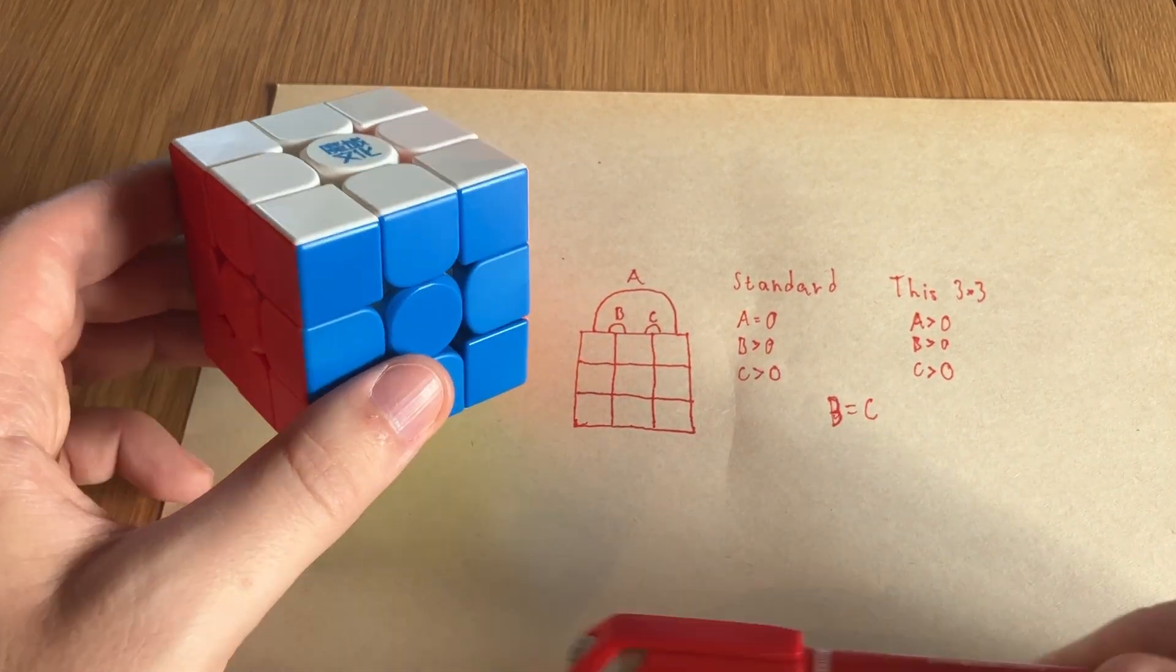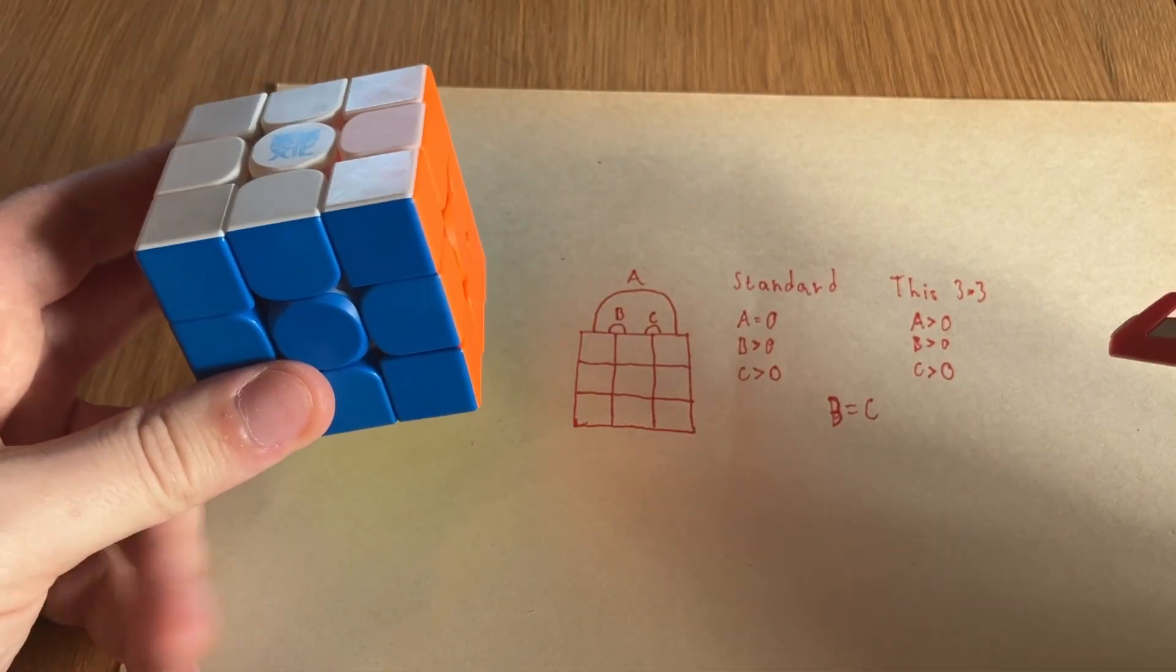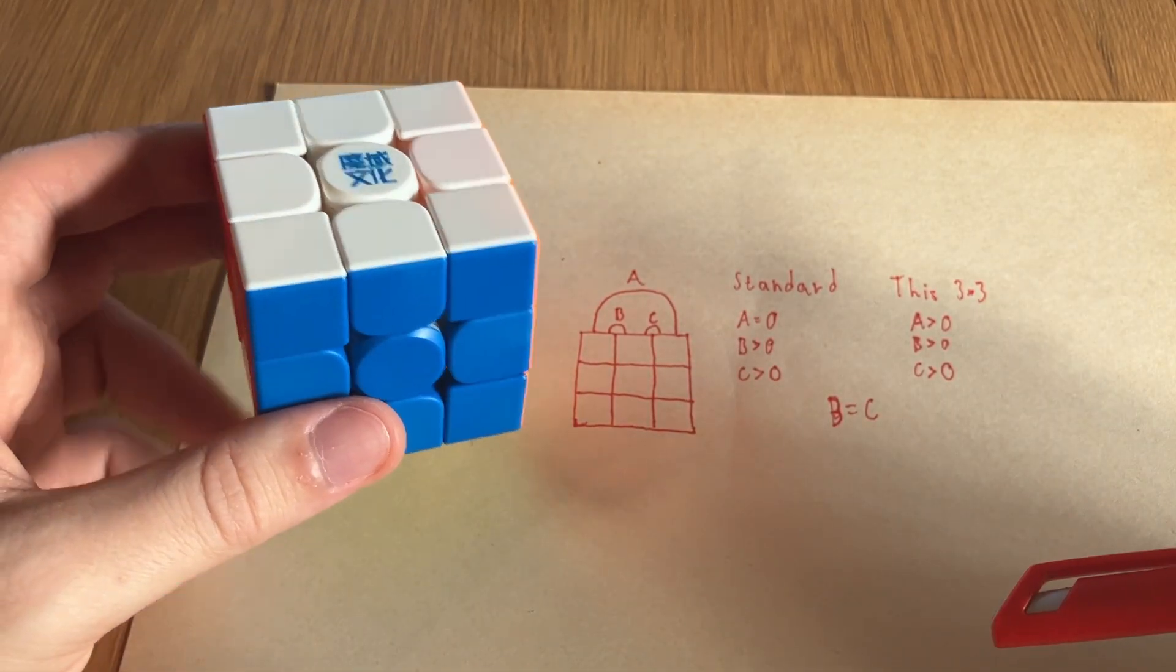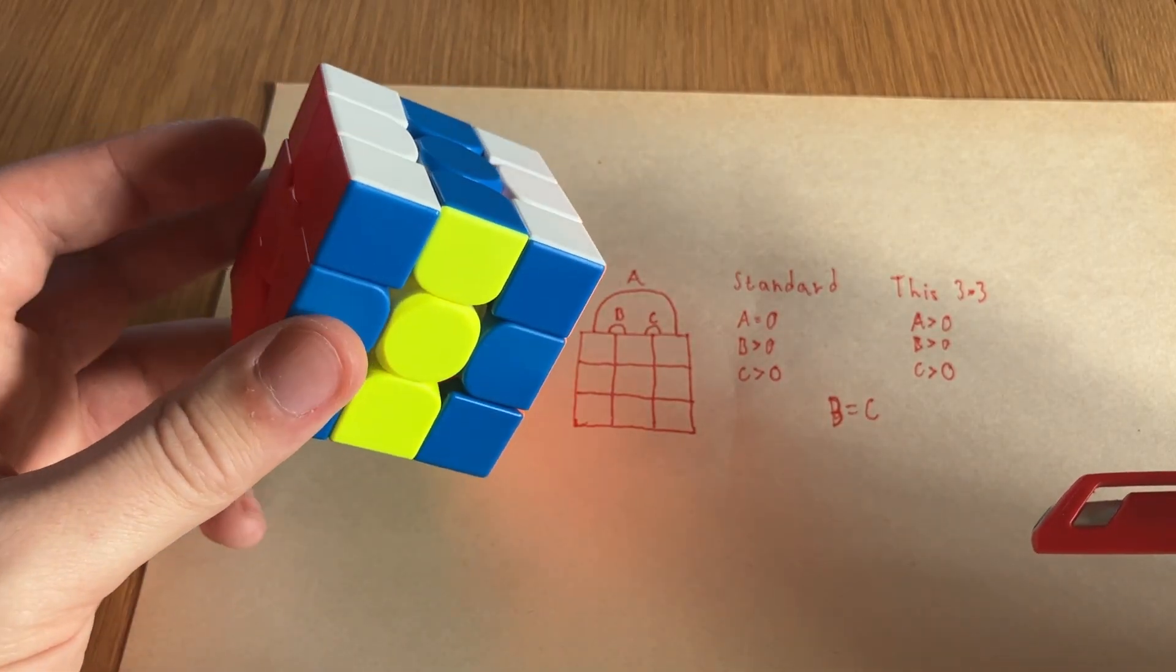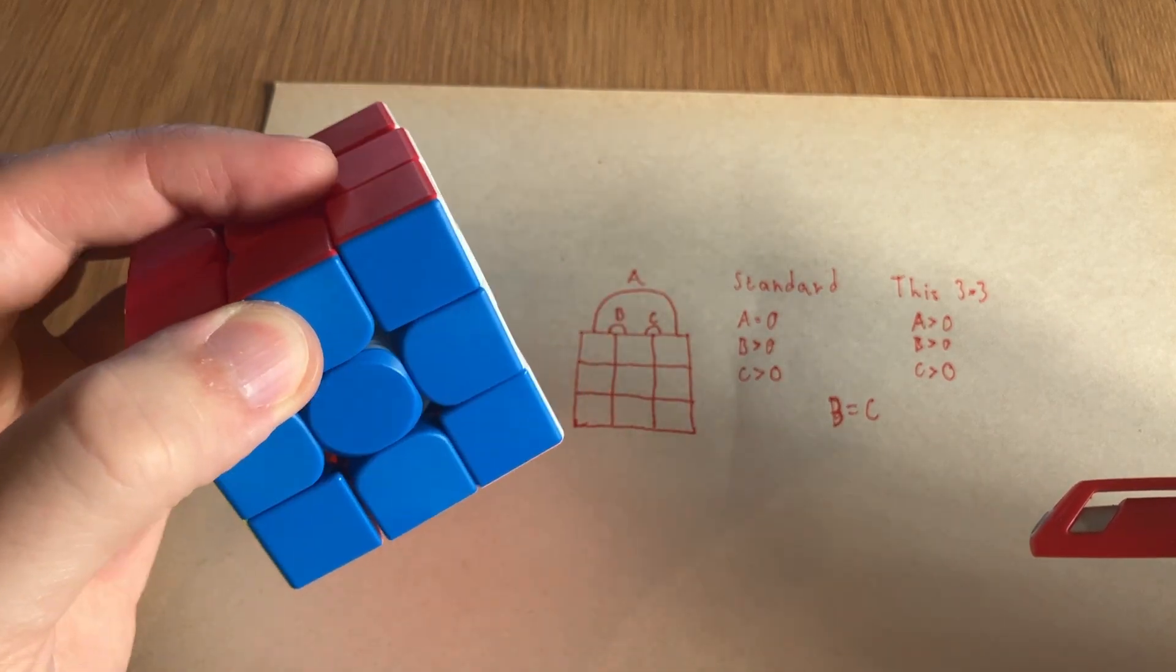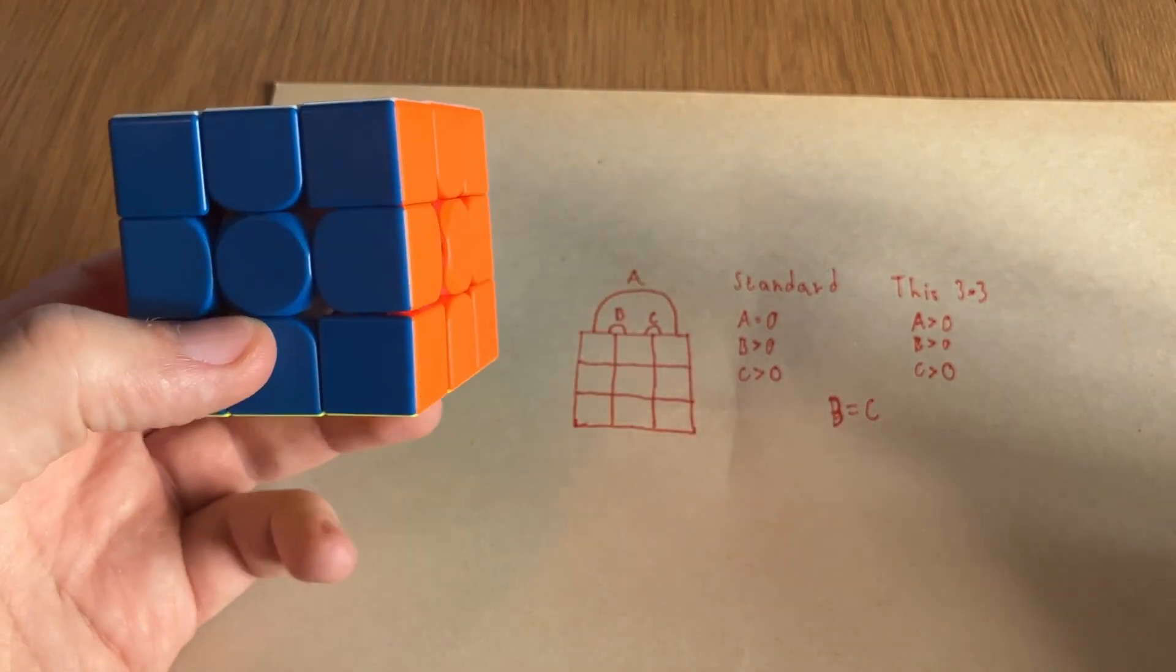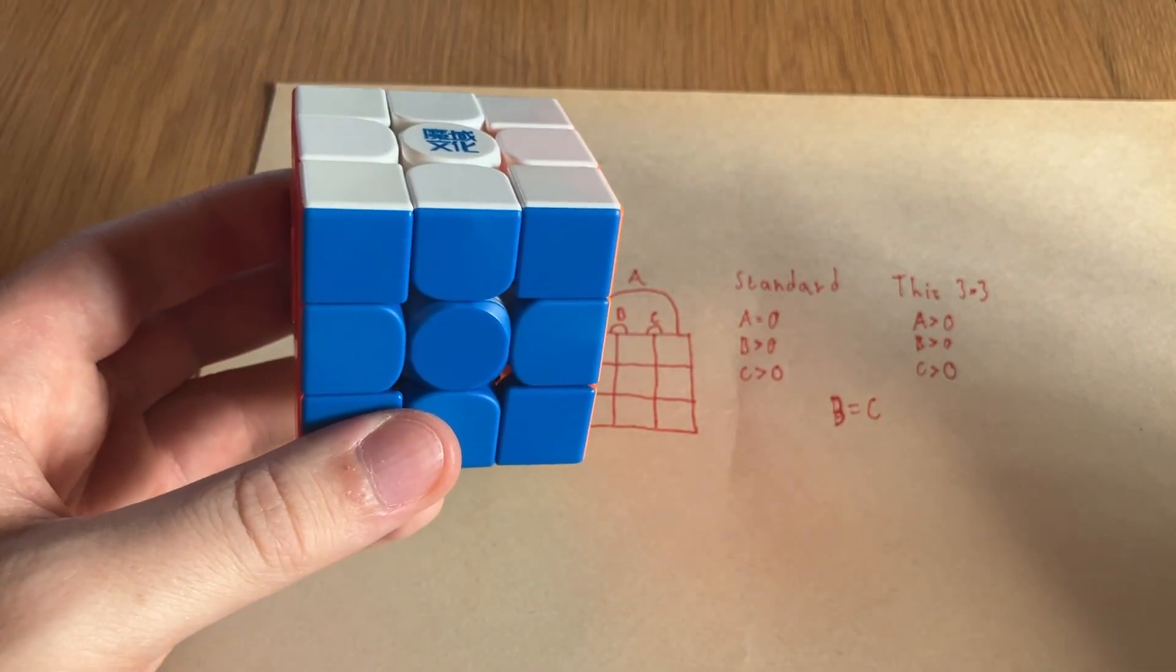But on this 3x3 that I have modified, it actually does have some friction, and I'm able to adjust it to the extent that we achieve this effect which allows for more control and moves that can be done with one-handed turning, but also other kinds of turning as well. And that's where all of the potential here, I believe, exists.